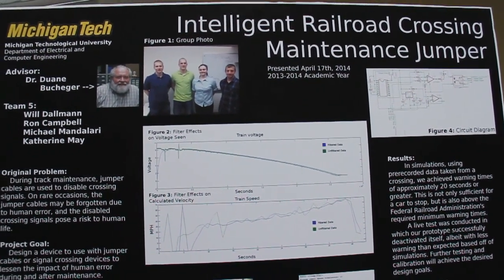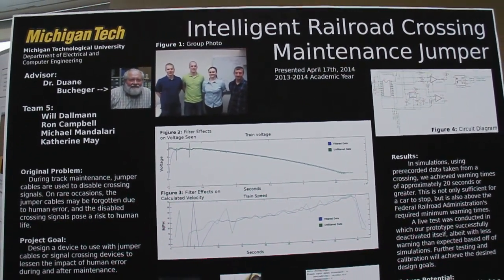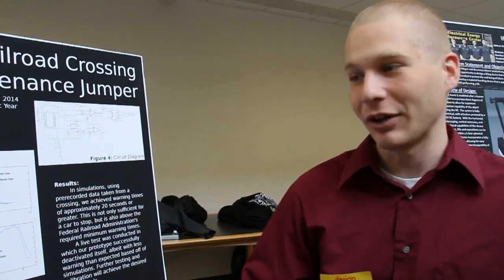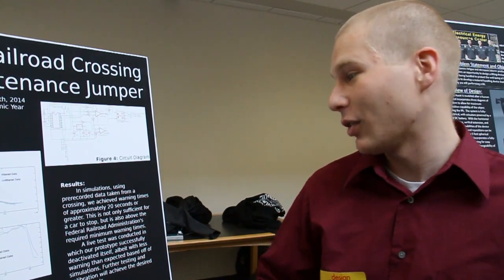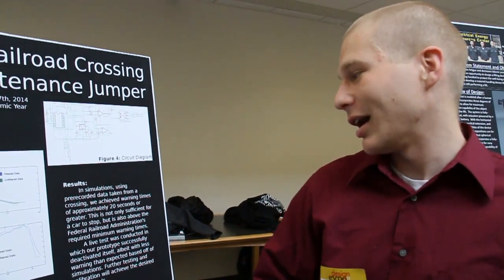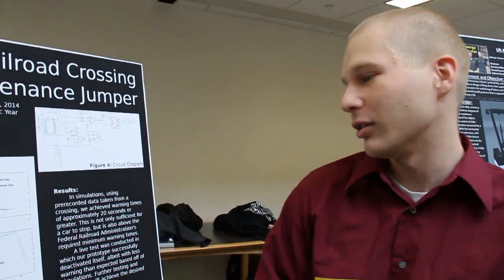From that position data, we take the derivative to get the velocity. Using that velocity with some filtering and other combination techniques, we can make a determination: is this a light maintenance wave vehicle, a heavy maintenance wave vehicle working, or is this a train? Based on that decision, we can then deactivate the jumper wire so that the crossing is returned to safe operation.